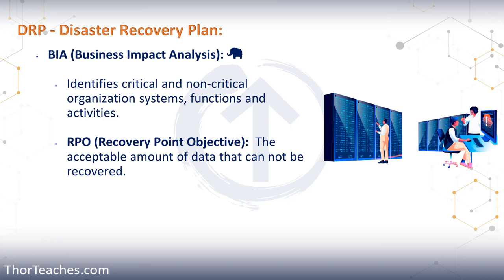Once we have identified all the critical systems and functional activities, we assign them to the tier system we talked about earlier. Each tier has a different acceptable downtime, and they also have a different recovery point objective. The recovery point objective is how much data is acceptable to lose — meaning if the system crashes right now, how much of the data on that system is acceptable to lose? For example, if we have a backup system that does a backup of all our data once a week and only once a week, then we have accepted that we can have an entire week of data loss by configuring that policy.